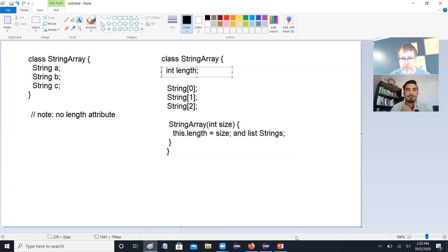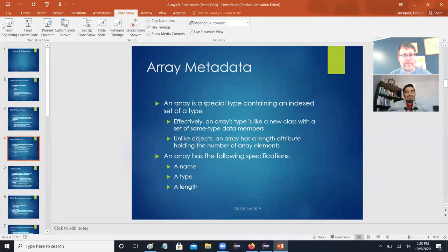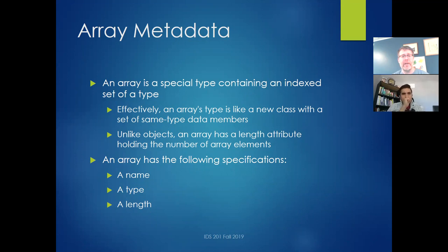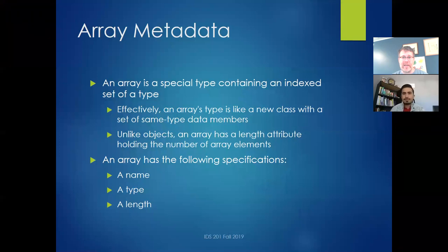Good when people remember things. So, an array has the following specifications: a name, a type, and a length. When you create an array, you have to give it those three things. When you declare it, you give it a name and a type. Then when you actually create it, you give it a size.